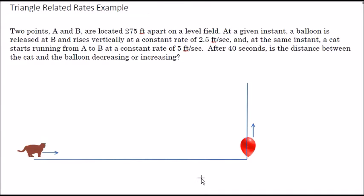Let's take a look. We have two points A and B located 275 feet apart on a level field. At a given instant, a balloon is released from point B and rises at a constant rate of 2.5 feet per second. At the same instant, a cat starts running from A to B at a constant rate of 5 feet per second. After 40 seconds, is the distance between the cat and the balloon decreasing or increasing?